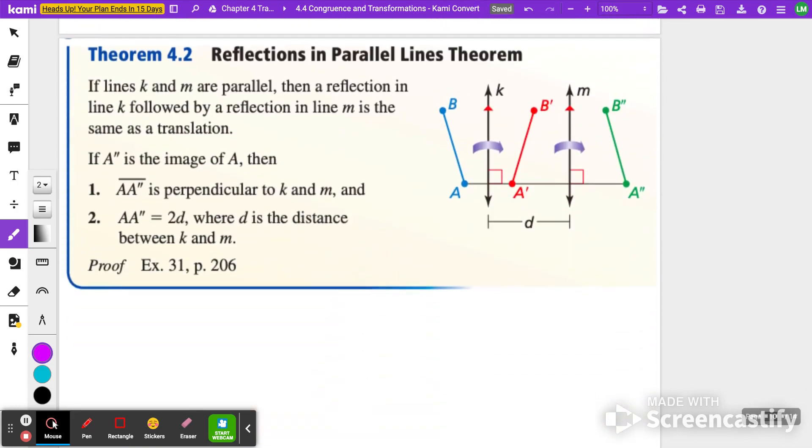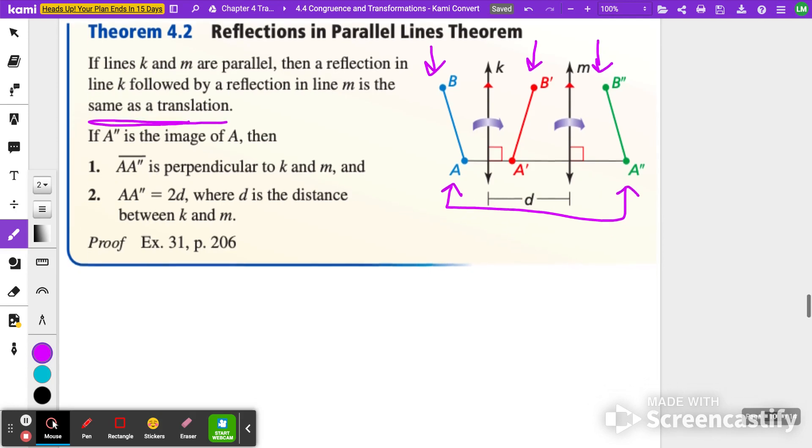The next thing we're going to talk about is the reflections and parallel lines theorem. And this is really just noticing that your parallel lines become your line of reflection. So if K and M are parallel, then a reflection in line K followed by a reflection in line M is the same as a translation. So for instance, if you started here at AB, you reflected it across line K, it becomes A prime, B prime, but then you reflect it one more time, it becomes A double prime, B double prime. Both of these from A to A double prime is just a translation where you just slide it to the right. So that's all that theorem is stating.